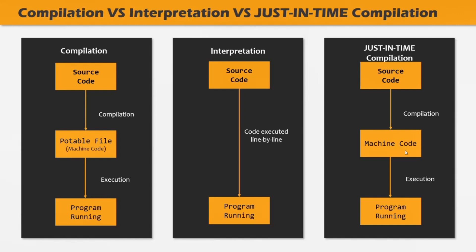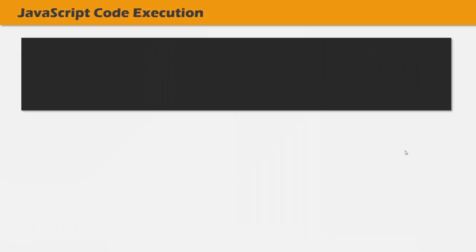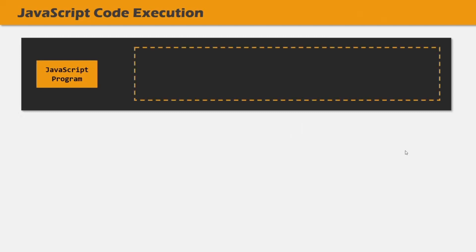Now let's understand how a JavaScript program gets compiled and executed by the browser. JavaScript code is executed by the JavaScript engine. As soon as you run a JavaScript program in the browser, the JavaScript engine comes into play. The first thing the JavaScript engine does is start parsing the JavaScript program line by line and check if the syntax of the code is correct. Parsing simply means the JavaScript engine reads the code line by line but does not execute it. If there is any error, the JavaScript engine will immediately stop parsing and throw the error.